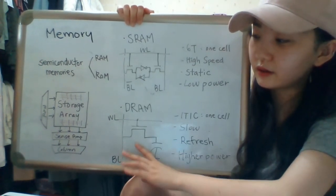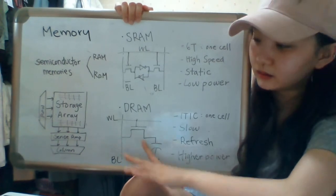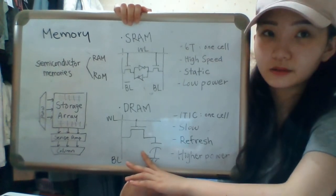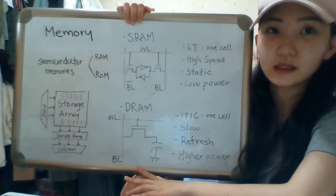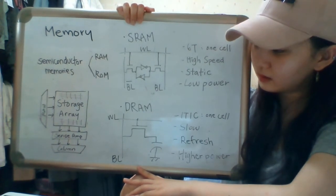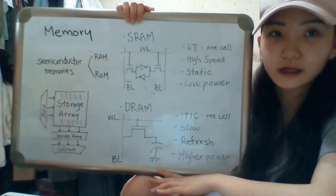And when we turn off the transistor, the capacitor gets randomized and it gets discharged. So we have to refresh it again.